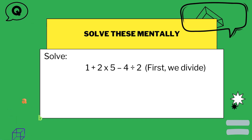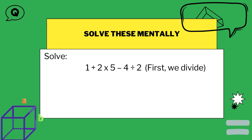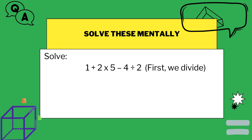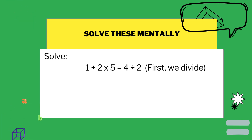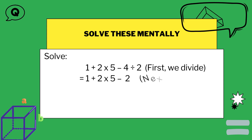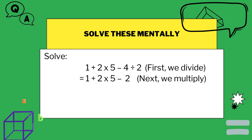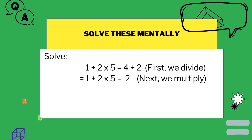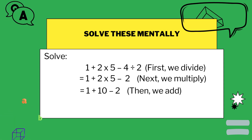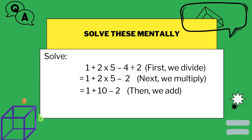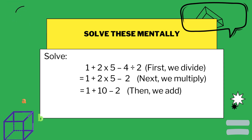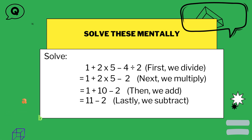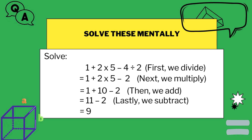For the expression 1 plus 2 times 5 minus 4 divided by 2, as per BODMAS the first priority is division: 4 divided by 2 equals 2. Next priority is multiplication: 2 times 5 equals 10. Then we perform addition: 1 plus 10 equals 11. Finally, 11 minus 2 gives 9, which is the correct answer.